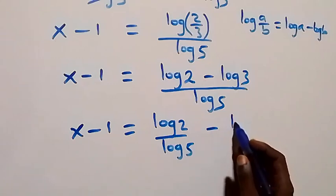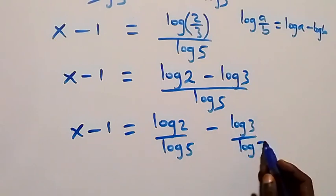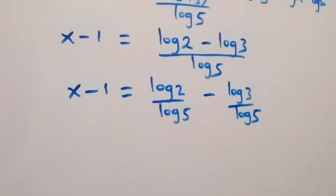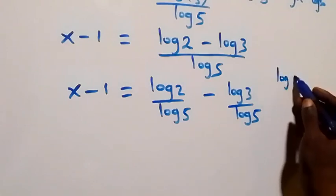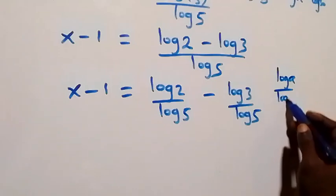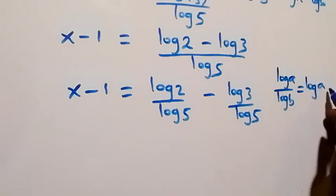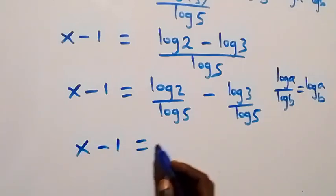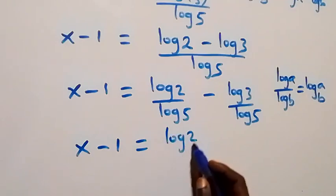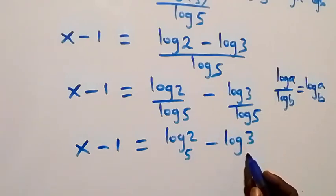Applying the change of base rule — log a over log b is the same as log a to base b — we have x minus 1 equals log 2 to base 5, minus log 3 to base 5.